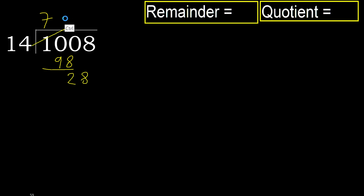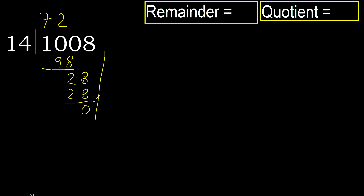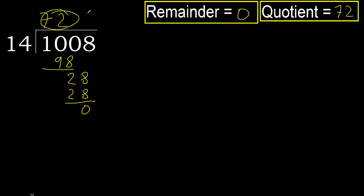14 multiplied by 2 is 28, which is not greater. Subtract. There is no next number, therefore finish it. 1008 divided by 14 is 72.